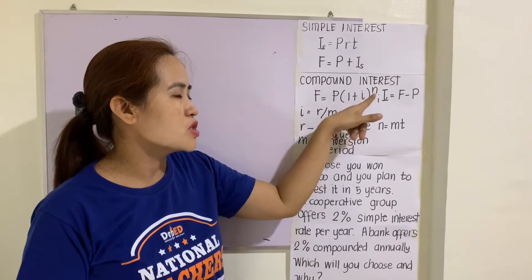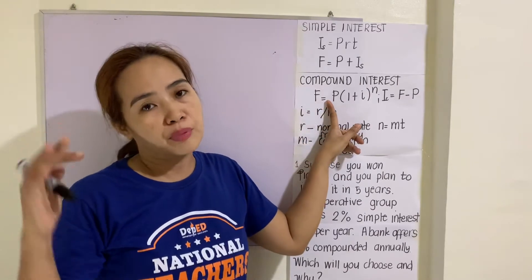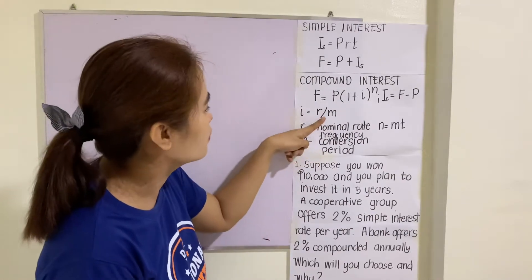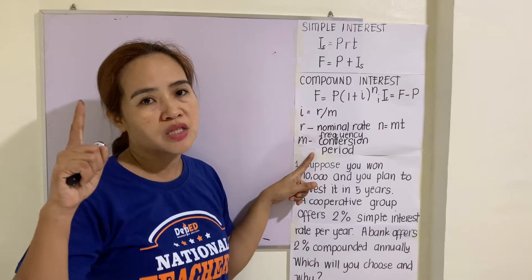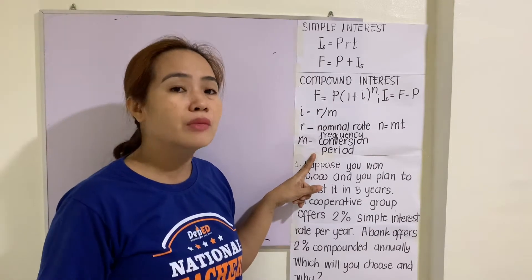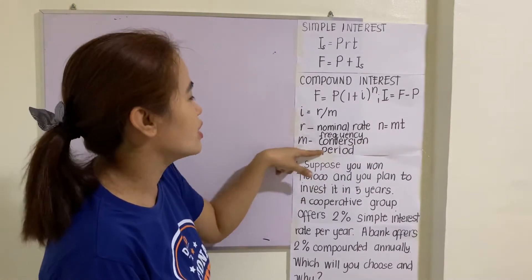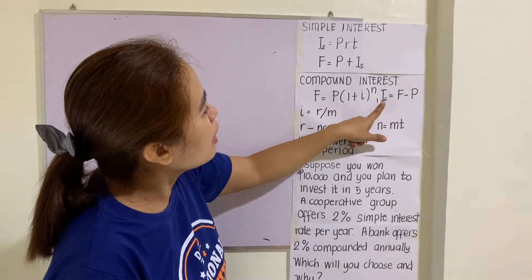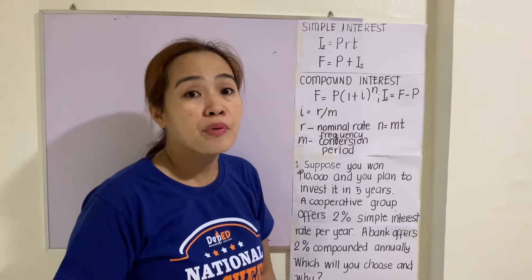For compound interest, the formula is F equals P times the quantity one plus I, raised to N. F is the maturity or future value, P is the principal or present value, I is computed by dividing the nominal rate by M — the frequency conversion period — which can be annually (1), semi-annually (2), quarterly (4), or monthly (12). N equals M times T. The compound interest formula is I sub C equals F minus P.